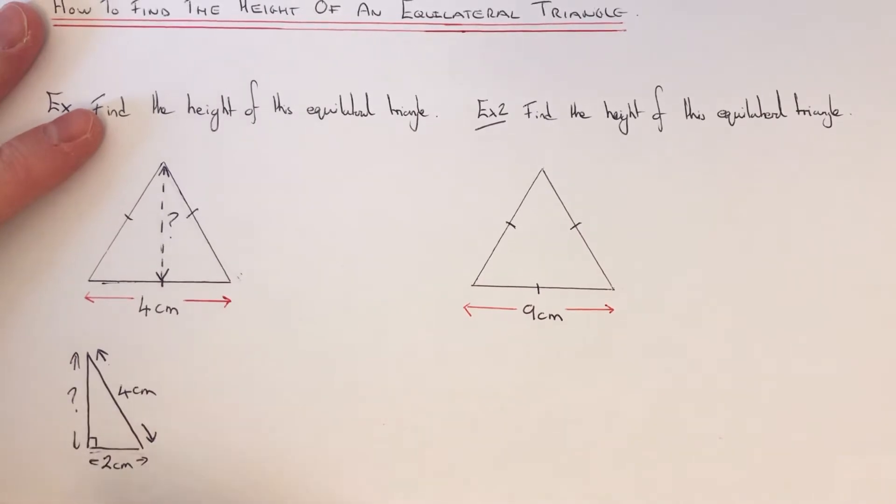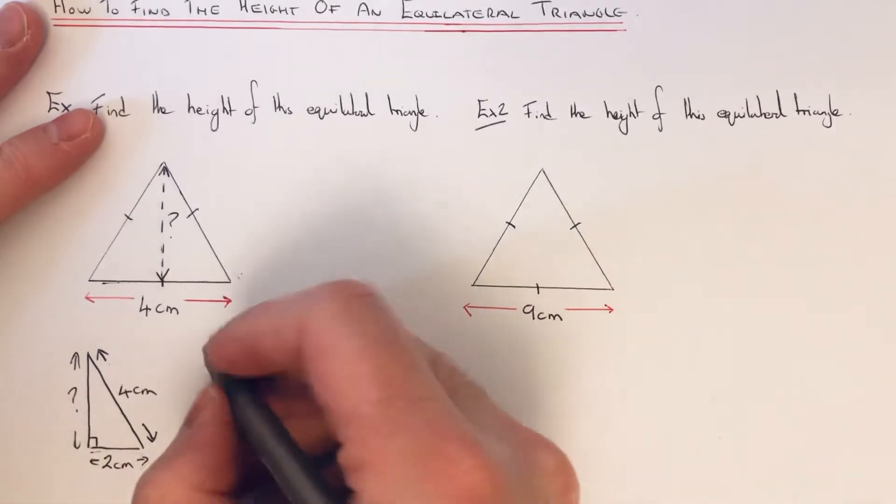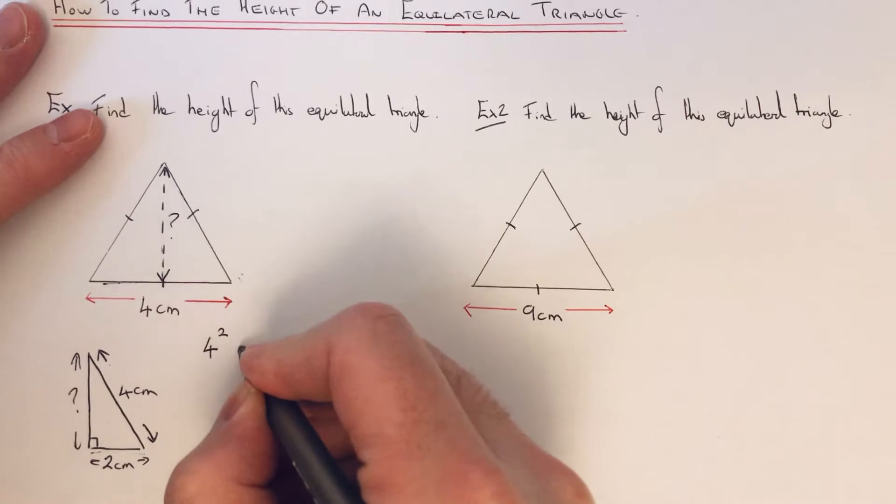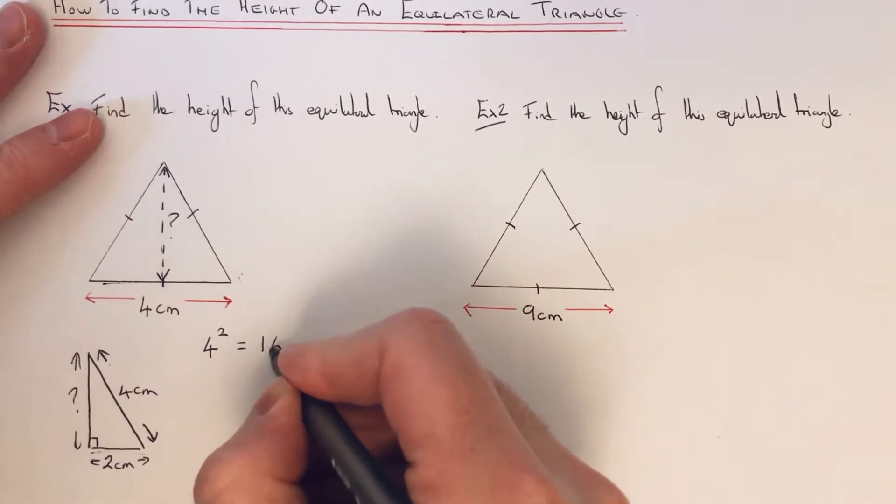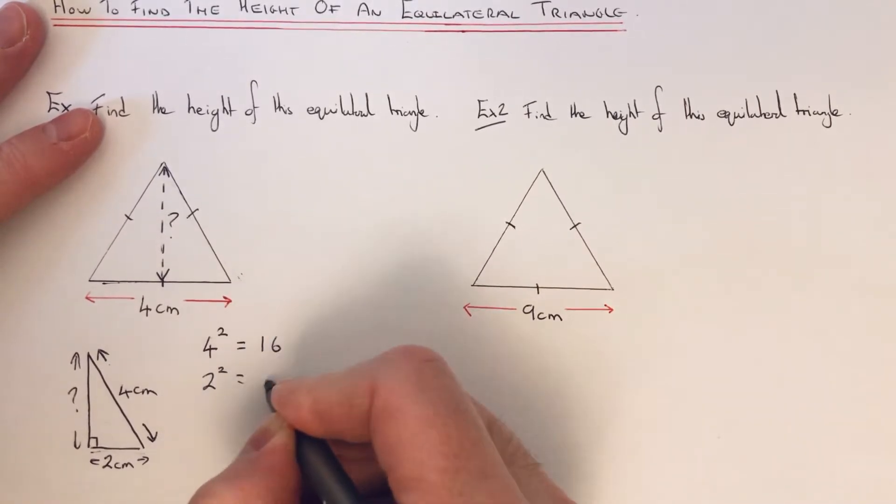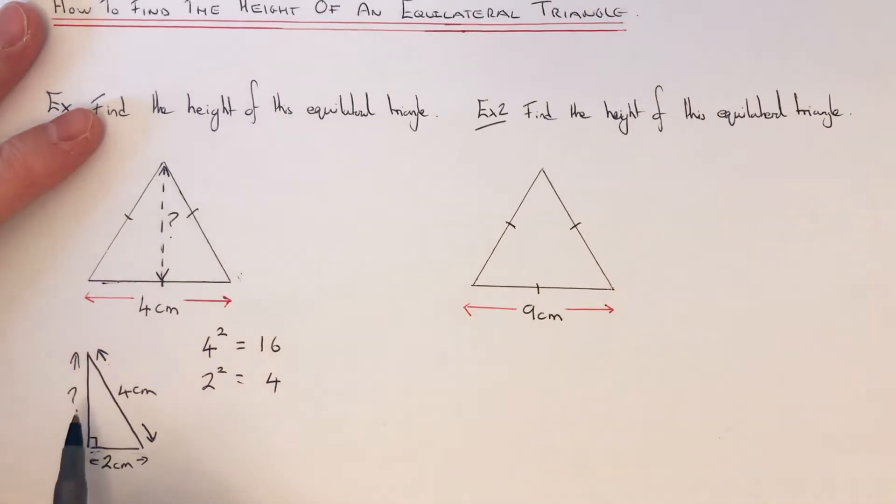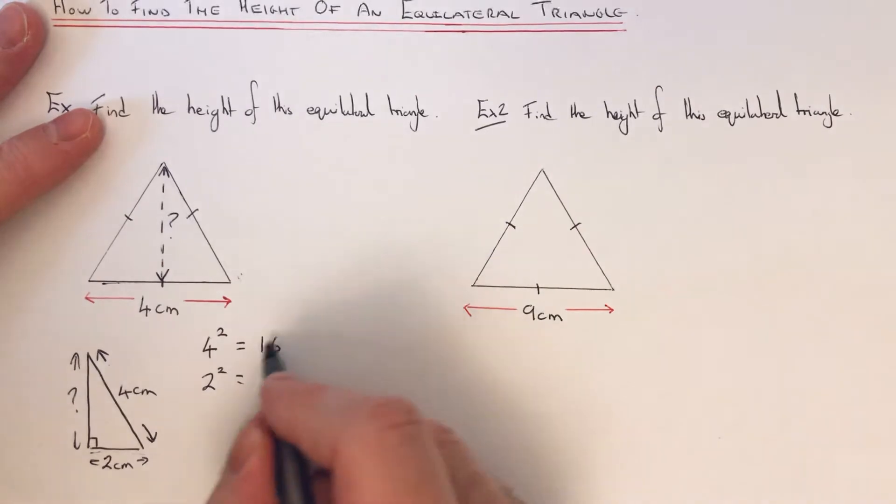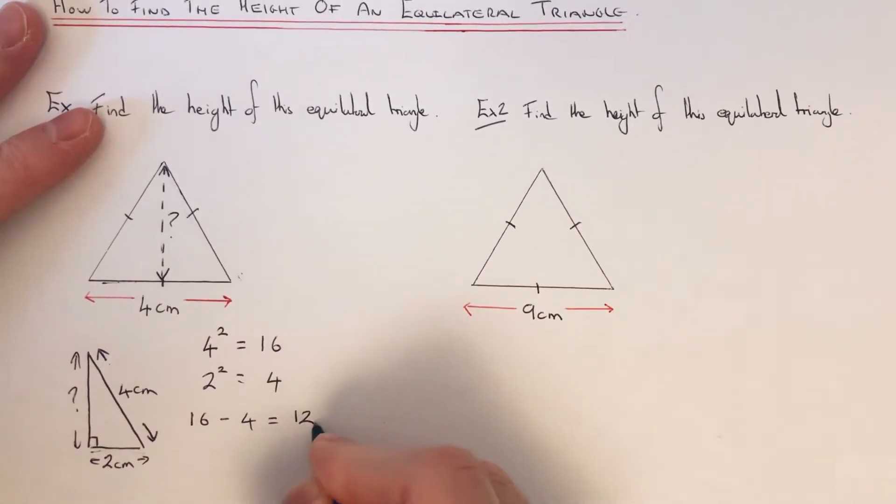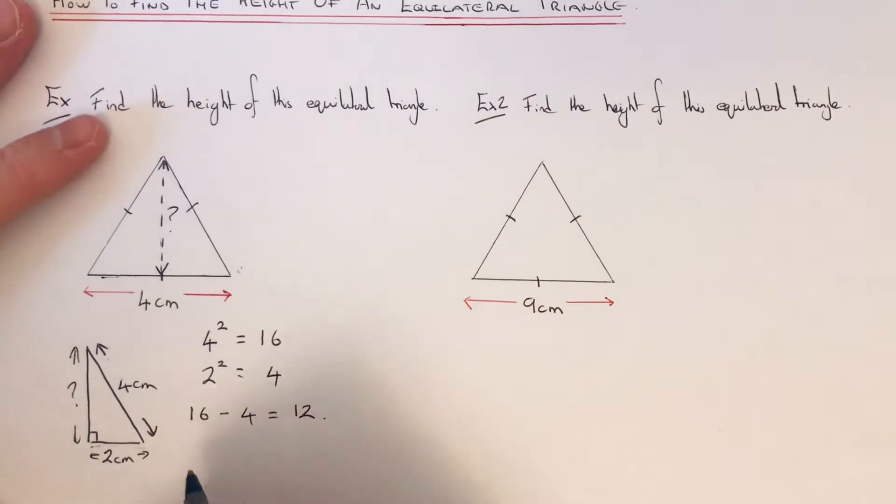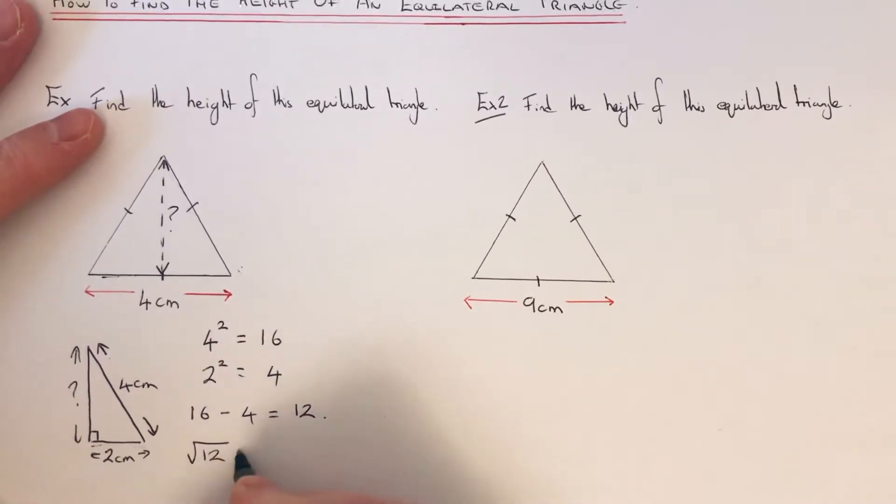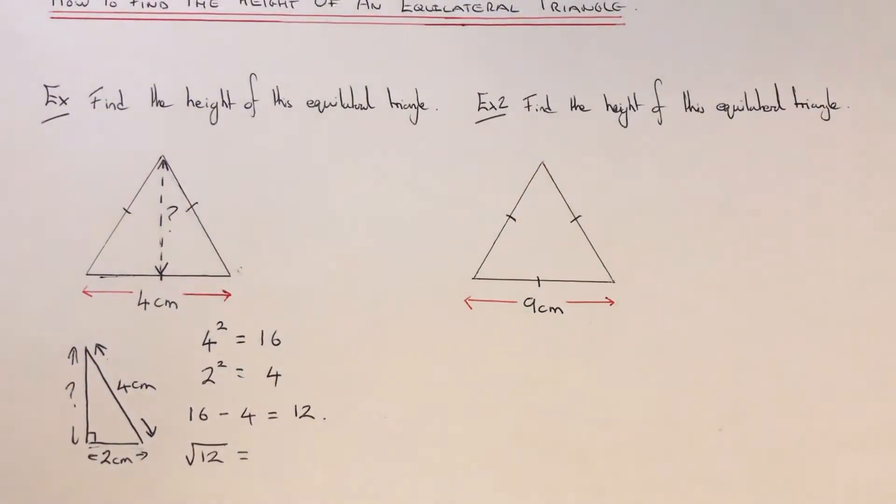So to do this we need to square the sides that we've got. So four squared is 16, two squared is four. Now this length here is not the longest side, so we need to subtract these square numbers. So 16 take away 4 is 12, and then take the square root of 12. So we need a calculator for this bit.